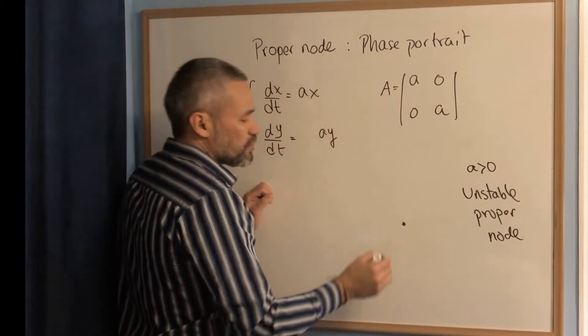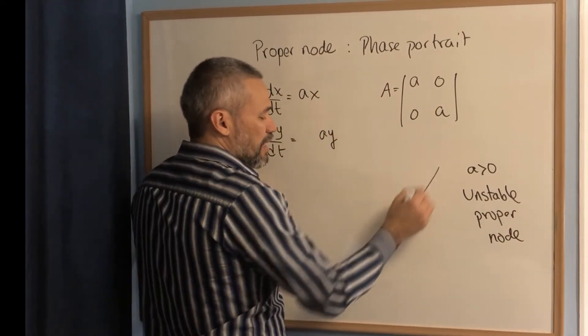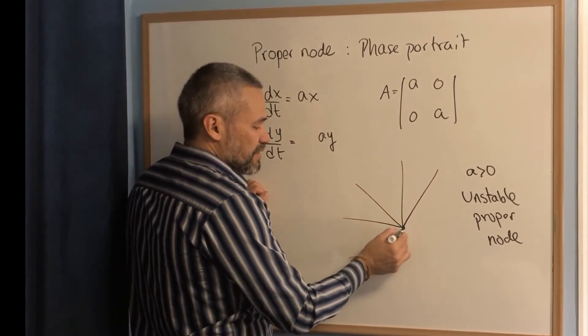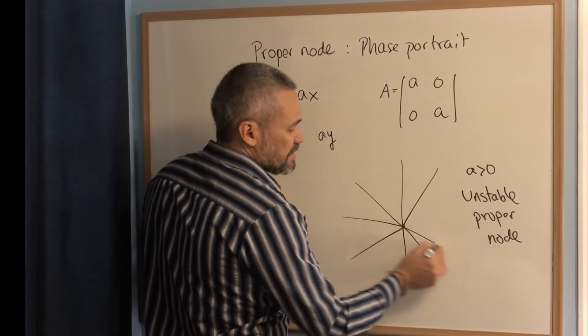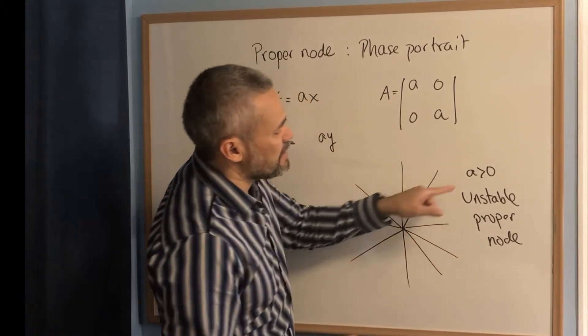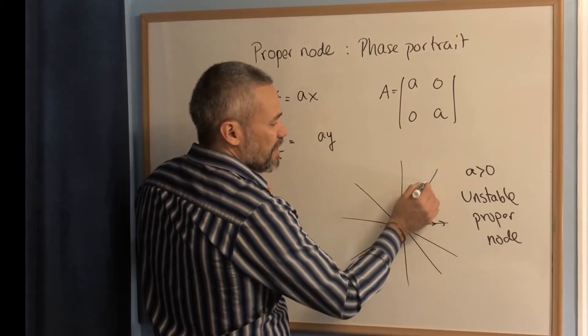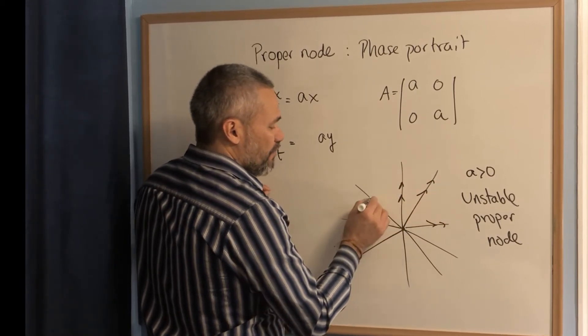And the phase portrait is just a collection of semilines. Every semiline is an orbit. And since a is bigger than zero, the arrows in all those semilines, they go away from the origin.